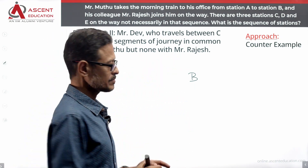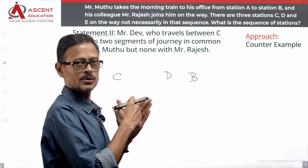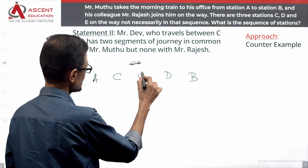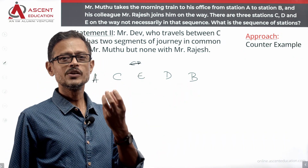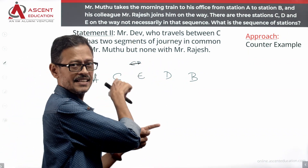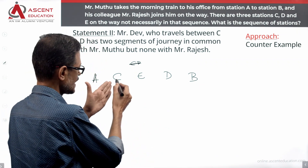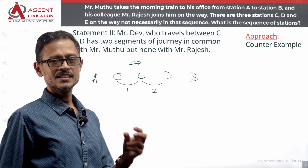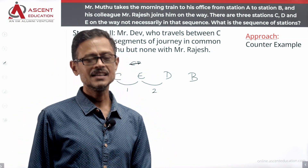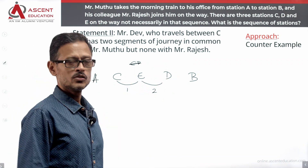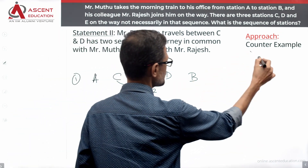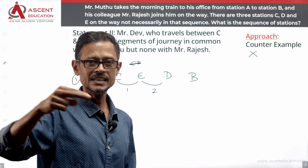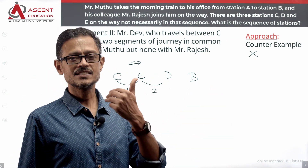Dave has two segments in common with Muthu. For Dave to travel between C and D in two segments, E must come between C and D — so the order is C to E, then E to D. This means the only possible sequence is A-C-E-D-B. Using statement two, we can confirm that E must lie between C and D, giving us the unique sequence A-C-E-D-B.